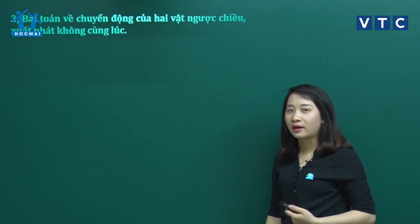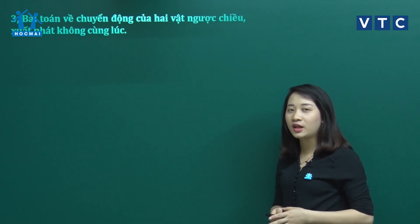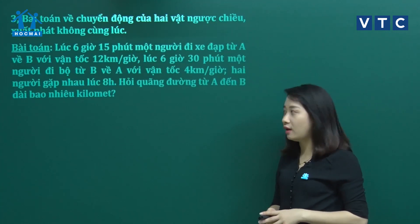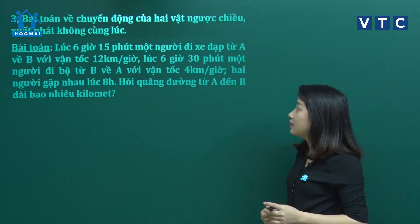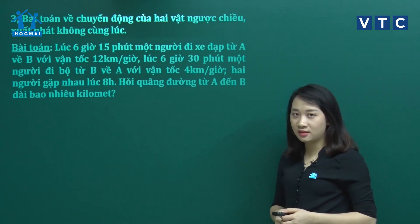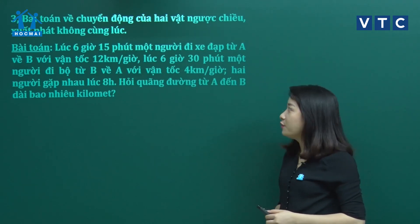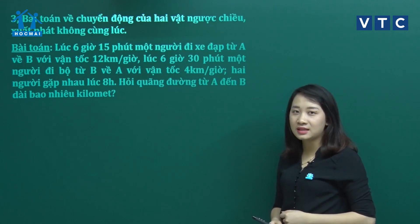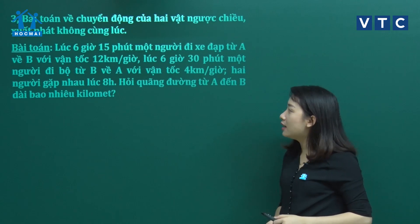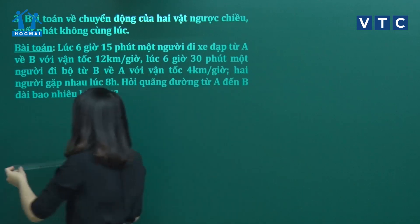Phần 3: bài toán 2 vật chuyển động ngược chiều nhưng không xuất phát cùng 1 lúc. Ví dụ: lúc 6h15 phút một người đi xe đạp từ A đến B với vận tốc 12 km/h. Lúc 6h30 phút một người đi bộ từ B về A với vận tốc 4 km/h. 2 người gặp nhau lúc 8h. Hỏi quãng đường AB dài bao nhiêu km?